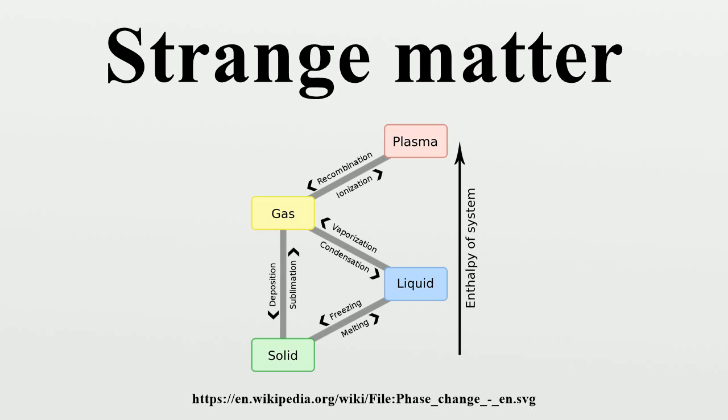Two meanings of the term strange matter: In particle physics and astrophysics, the term is used in two ways, one broader and the other more specific. The broader meaning is simply quark matter that contains three flavors of quarks: up, down, and strange.